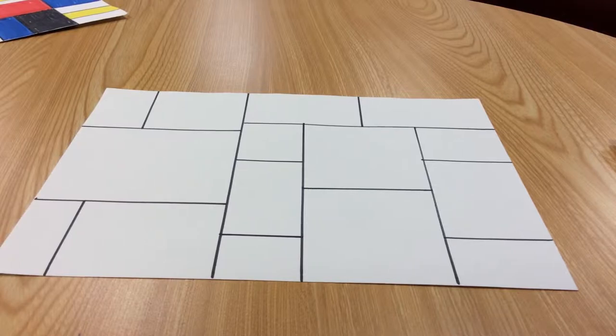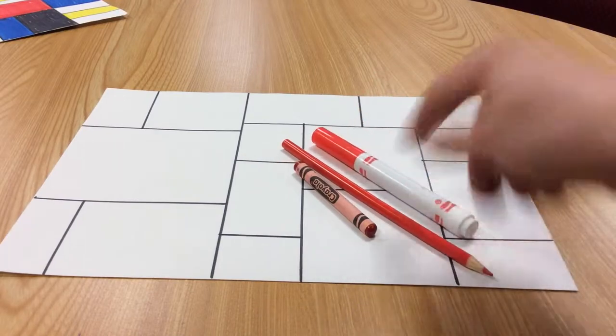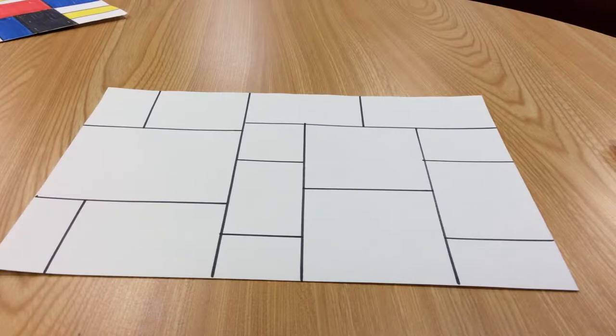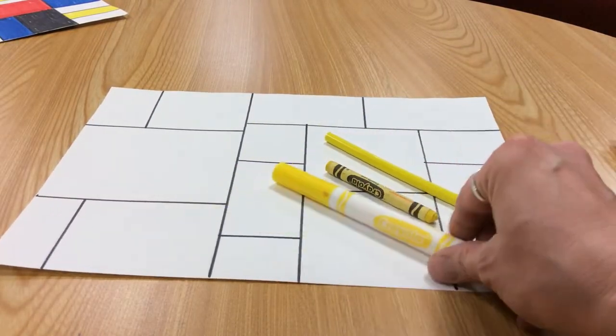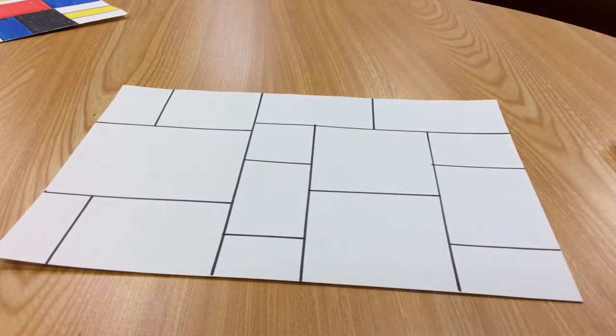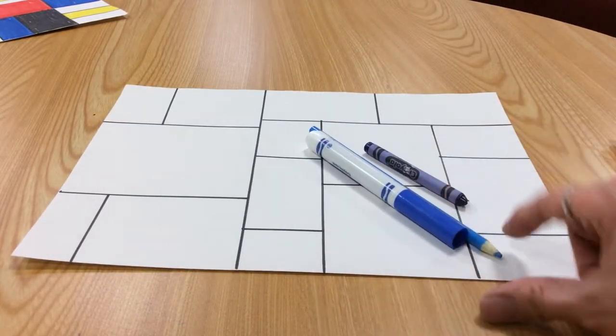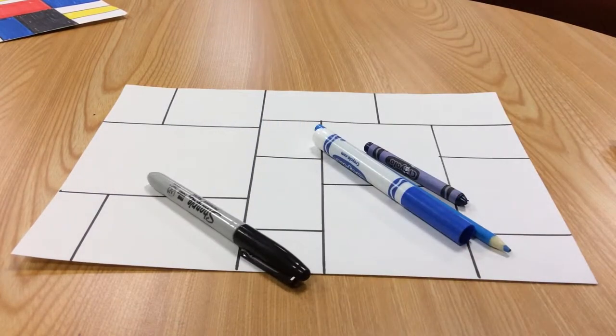The next step would then be coloring them in. You can use red crayons, colored pencils, and markers. You can use yellow colored pencils, crayons, and markers. And you can use blue markers, colored pencils, and crayons. And then of course you can use black.